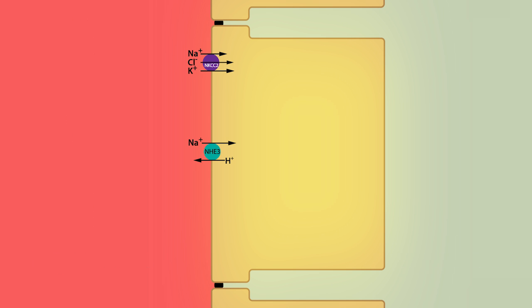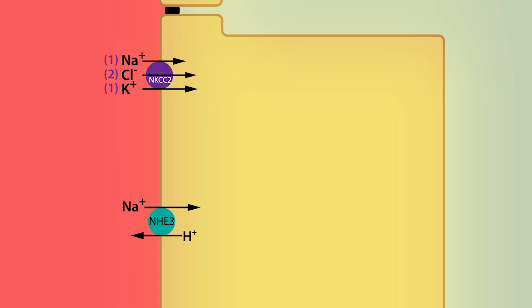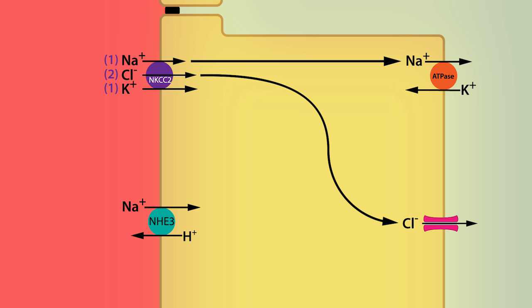The NKCC2 cotransporter, which is located exclusively in the thick ascending limb, uses the sodium concentration gradient to transport one sodium, one potassium, and two chloride ions across the apical membrane into the cells. After being transported into the cell, sodium ions are transported out across the basolateral membrane by the sodium-potassium ATPase. Chloride ions passively diffuse out across the basolateral membrane through chloride ion channels.